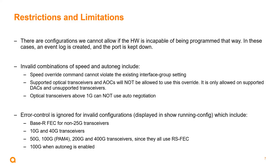Optical transceivers at one gig cannot use auto negotiation. With regards to error control, error control will be ignored for invalid configurations, which include things like base RFEC for non-25 gig transceivers, 10 and 40 gig transceivers, 50, 100, 200, and 400 gig transceivers since they all use RSFEC, and 100 gig transceivers when auto negotiation is enabled.